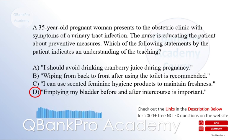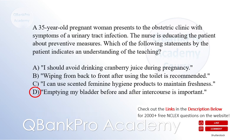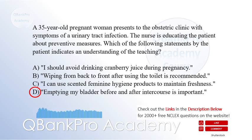Explanation: Pregnant women are at an increased risk of urinary tract infections due to hormonal changes and anatomical factors. Emptying the bladder before and after sexual intercourse helps flush out bacteria and reduces the risk of infection. Drinking cranberry juice is beneficial in preventing UTIs as it contains compounds that inhibit bacterial adhesion, so option A is incorrect. Wiping from front to back after using the toilet is recommended to prevent the spread of bacteria from the anal area to the urethra, so option B is incorrect. Scented feminine hygiene products can irritate the urethra and increase the risk of infection, so option C is incorrect.